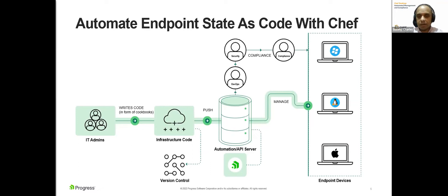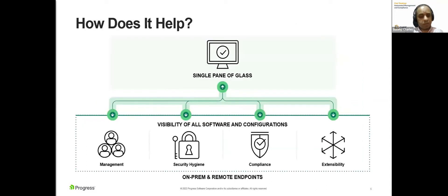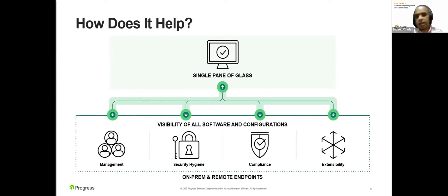Chef Desktop is one of the tools that offers the ability to see the state of your endpoints across operating systems — whether Linux, Windows, or Mac. When you execute all of this using Chef Desktop or any other tool, you get comprehensive visibility. It's easy to manage because you're saving cycle time. You can remediate issues quickly, and there is continuous security and compliance ensured through greater visibility — along with productivity gains for you and your team.